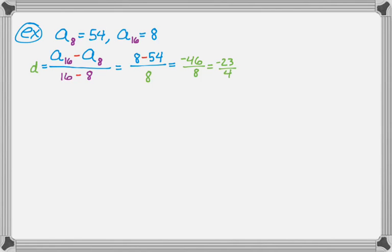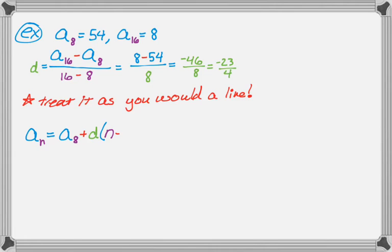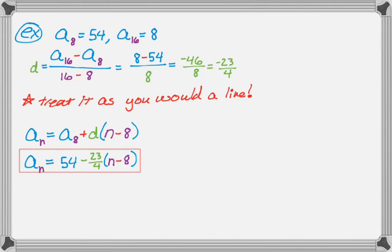So what I'm going to do is I'm going to write a general form of the nth term. So the nth term, since we're treating it like a line, the nth term is going to be a sub 8 plus d times the quantity n minus 8, so make sure those 8's match up. And if I plug in, I get a sub n is 54 minus 23 over 4 times the quantity n minus 8. And actually, if I didn't have to write this in terms of the first term of the sequence, I would be done there.